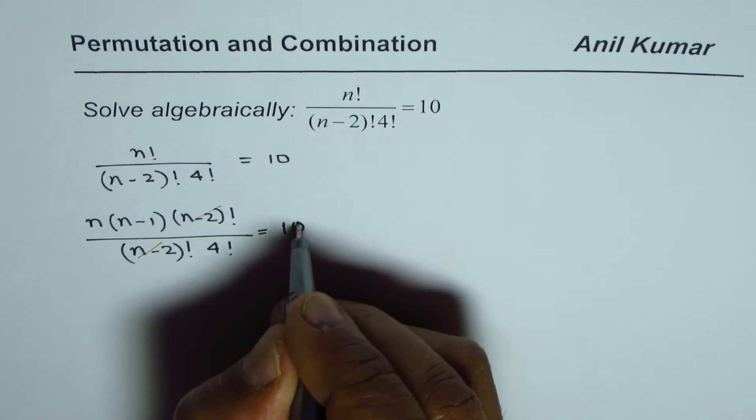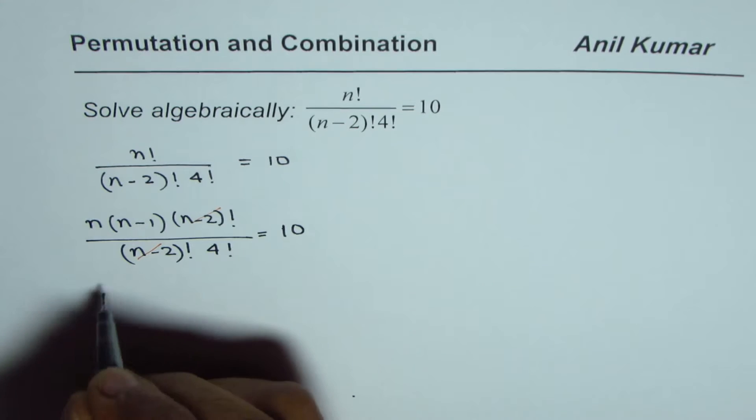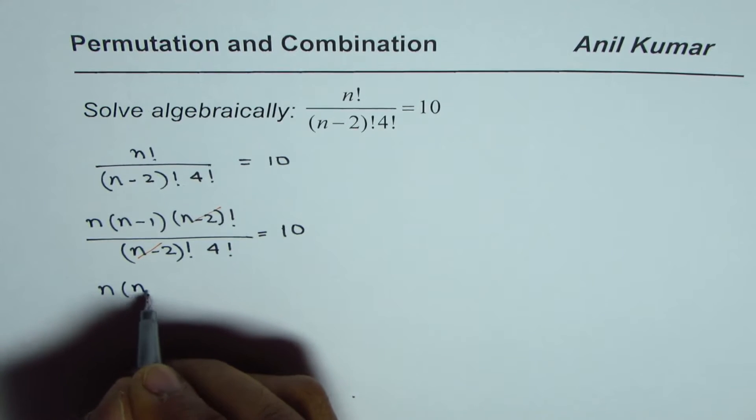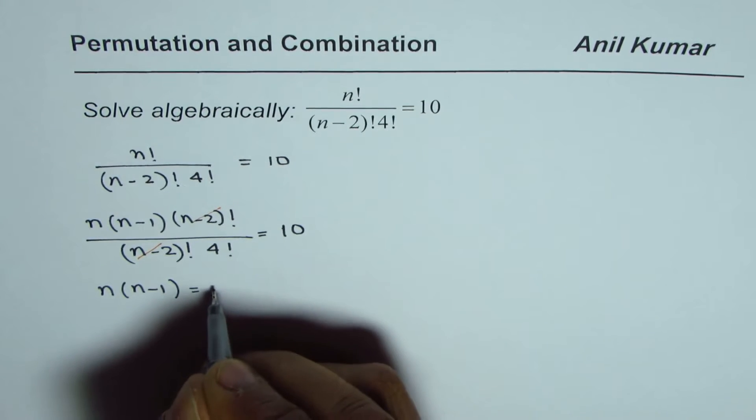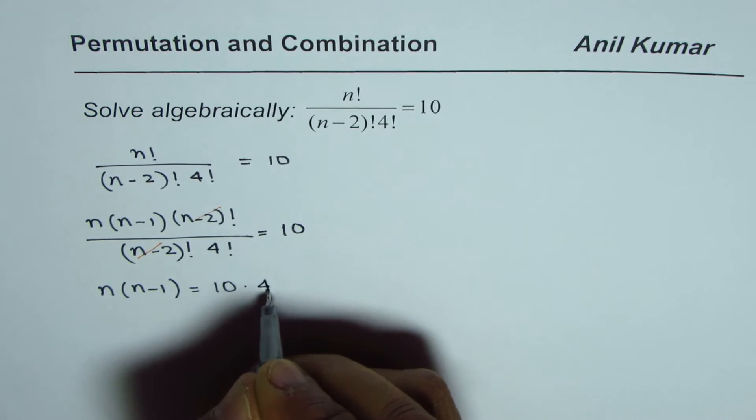This is equal to 10. Now let's cross multiply. We are left with n times n minus 1 equals to 10 times 4 factorial.